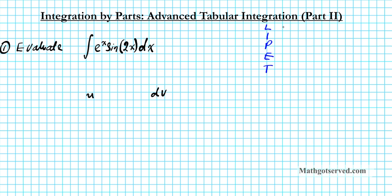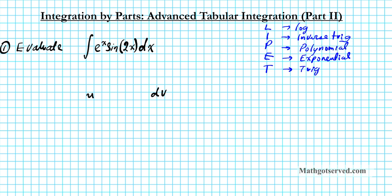The LIPET rule: L is for logarithmic function, I is for inverse trig, P is for polynomial function, E is for exponential function, and T is for trigonometric function. Going from L to T, just like your order of operations, whichever function shows up first in your integrand is the function that will be selected as u. We have an exponential and a trigonometric function here, so u is going to be the exponential function since it ranks higher using LIPET.